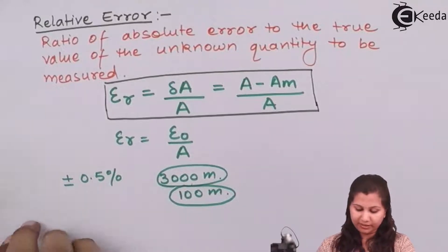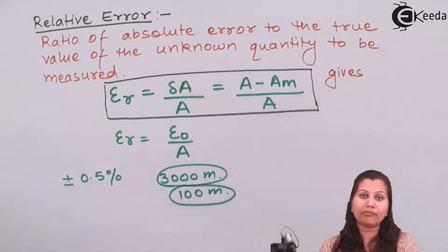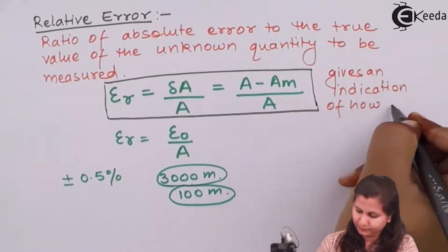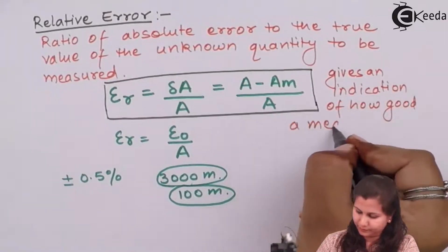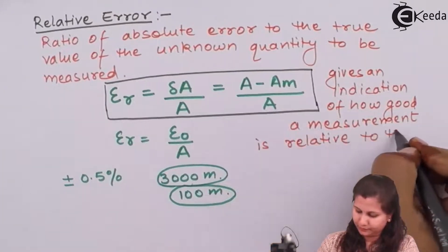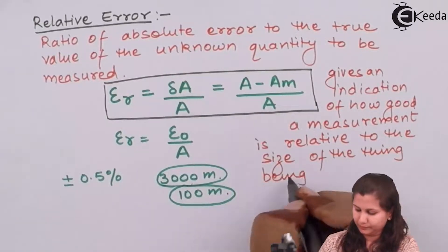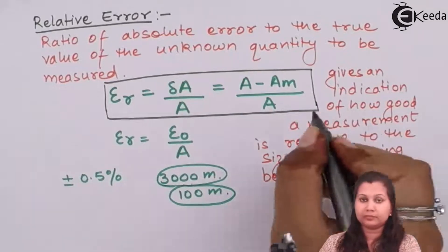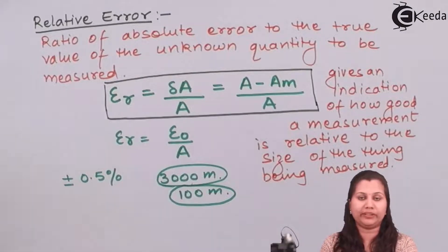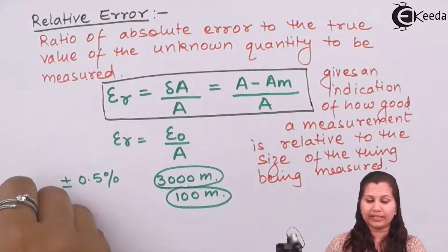So the relative error gives us an indication that the 3000-meter measurement is more accurate compared to the 100-meter measurement using the same instrument. Relative error gives us an indication of how good our measurement is — and this goodness is with respect to the size of the quantity being measured.